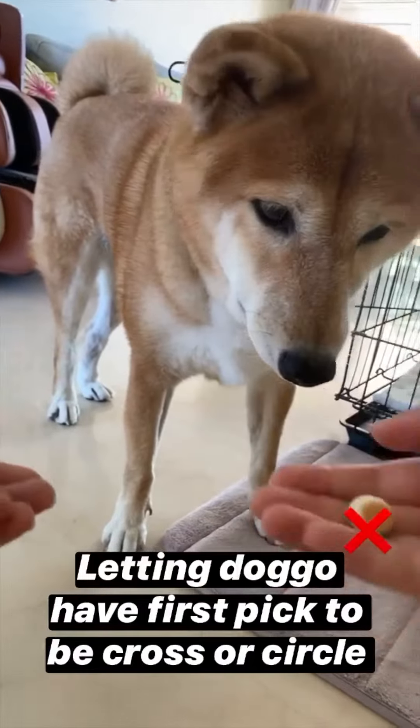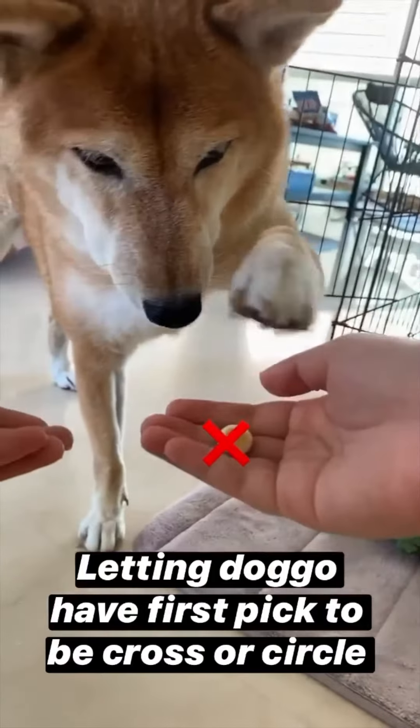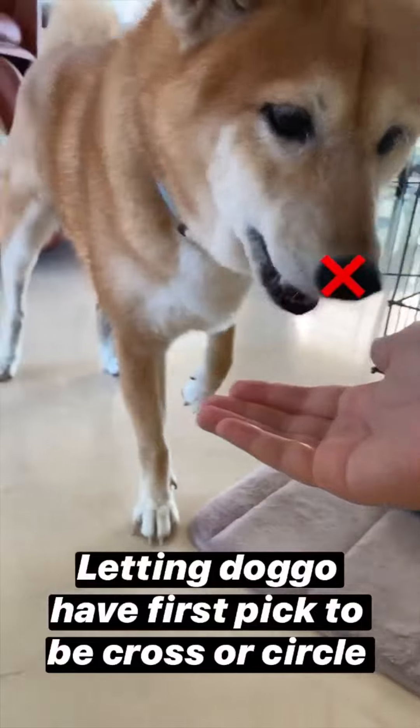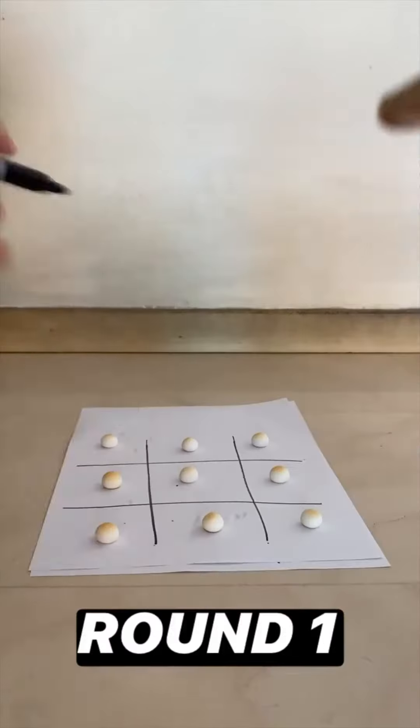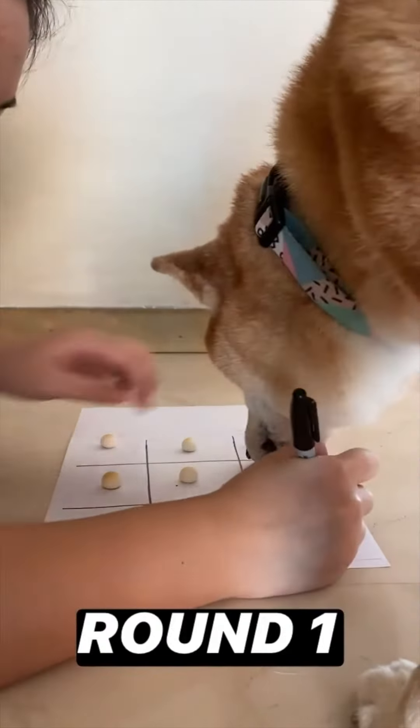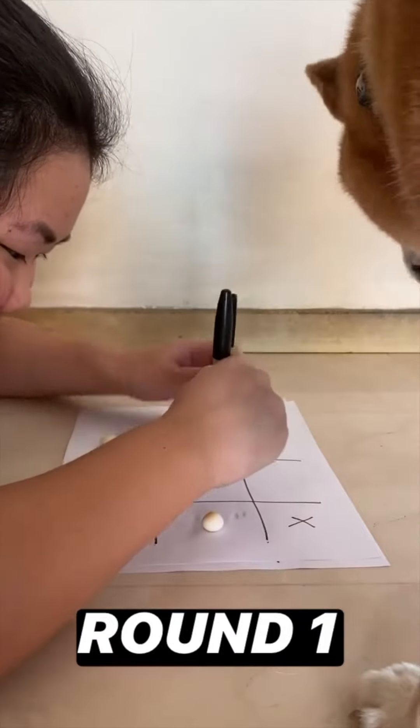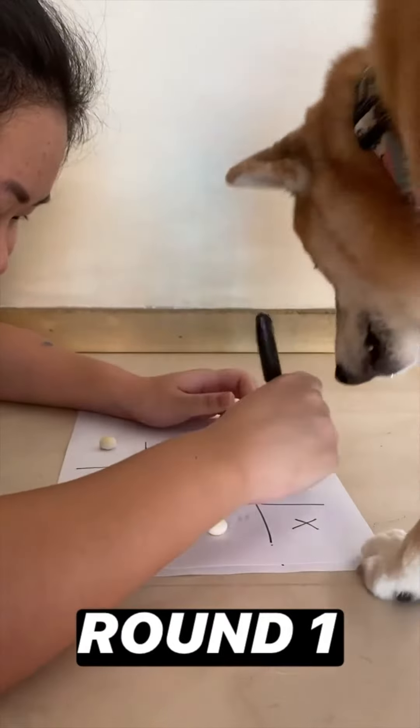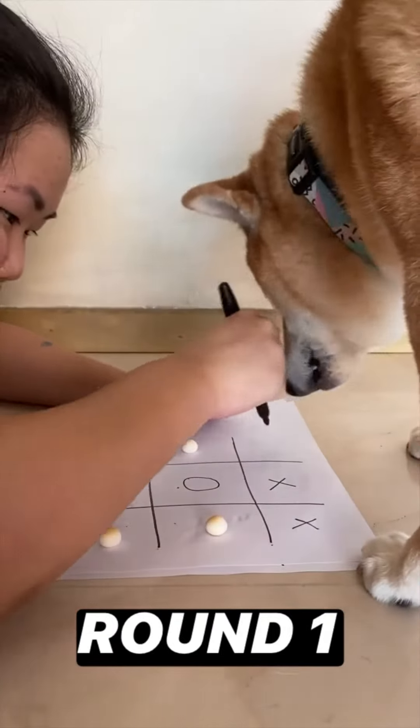Do you want cross or circle? This for cross, this for circle. Okay, cross you are then. Wait, not my turn yet. Okay, you may proceed.